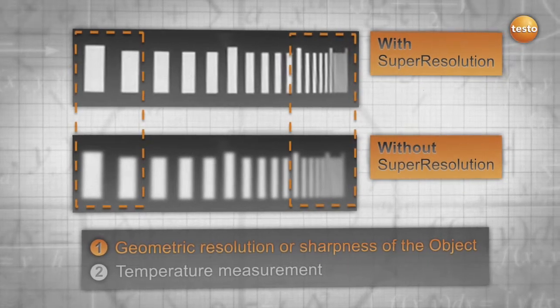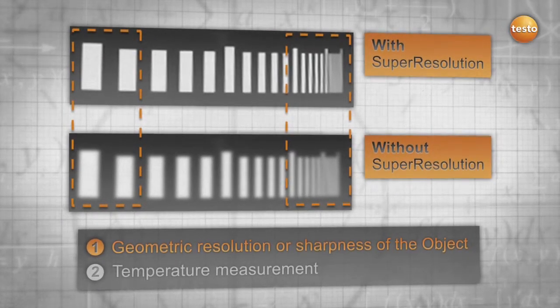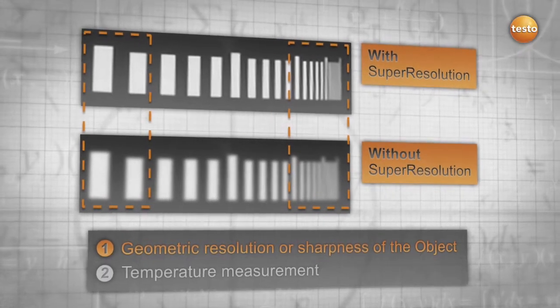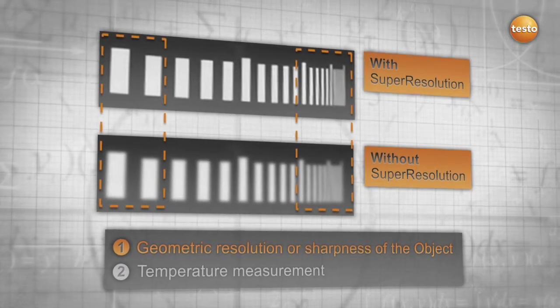Without super-resolution, you get a blurry image. The smaller and denser the slots, the more blurry the image. With super-resolution, you get a sharper and more detailed image.